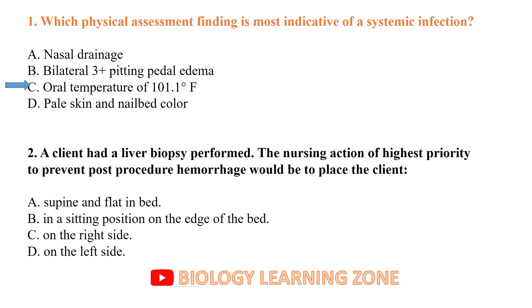MCQ number two: A client had a liver biopsy performed. The nursing action of highest priority to prevent post-procedure hemorrhage would be to place the client on the right side, so that post-procedure hemorrhage does not occur.